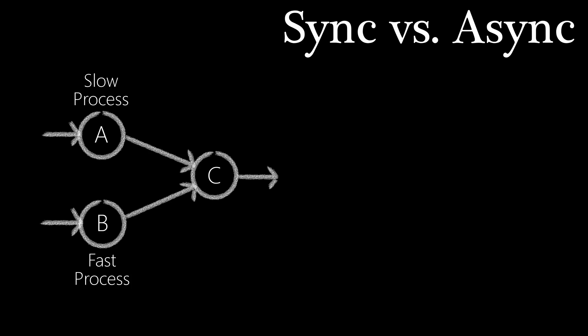Nodes can be executed either synchronously or asynchronously. In this example, we have two nodes with different real-world execution times. B is a fast process, while A is slow.